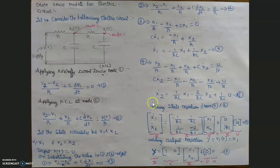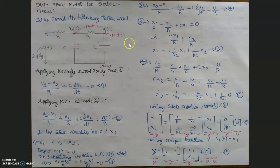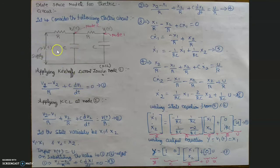To find the transfer function of an electrical system, we apply either KVL or KCL. Here with resistance and capacitance, we apply Kirchhoff's Current Law. KCL operates at nodes, and by taking nodes we use the principle that incoming current equals outgoing current. There is no supply voltage at node 1, and hence zero is present on the right-hand side.